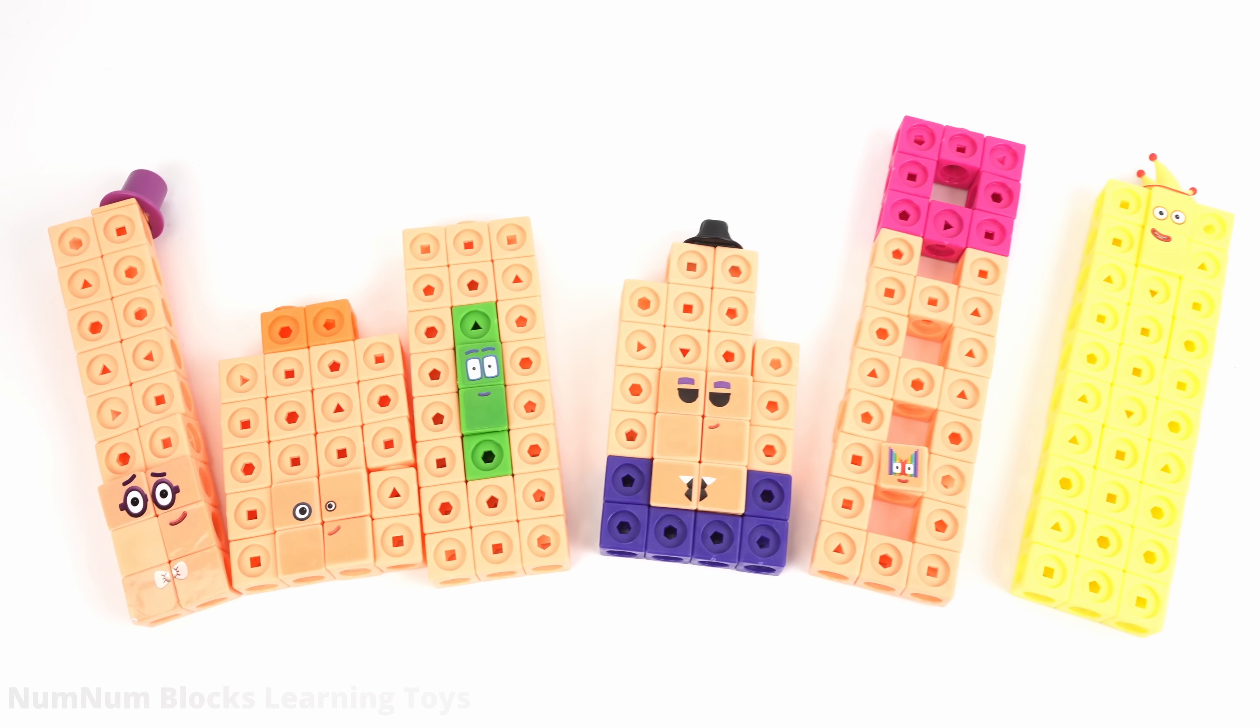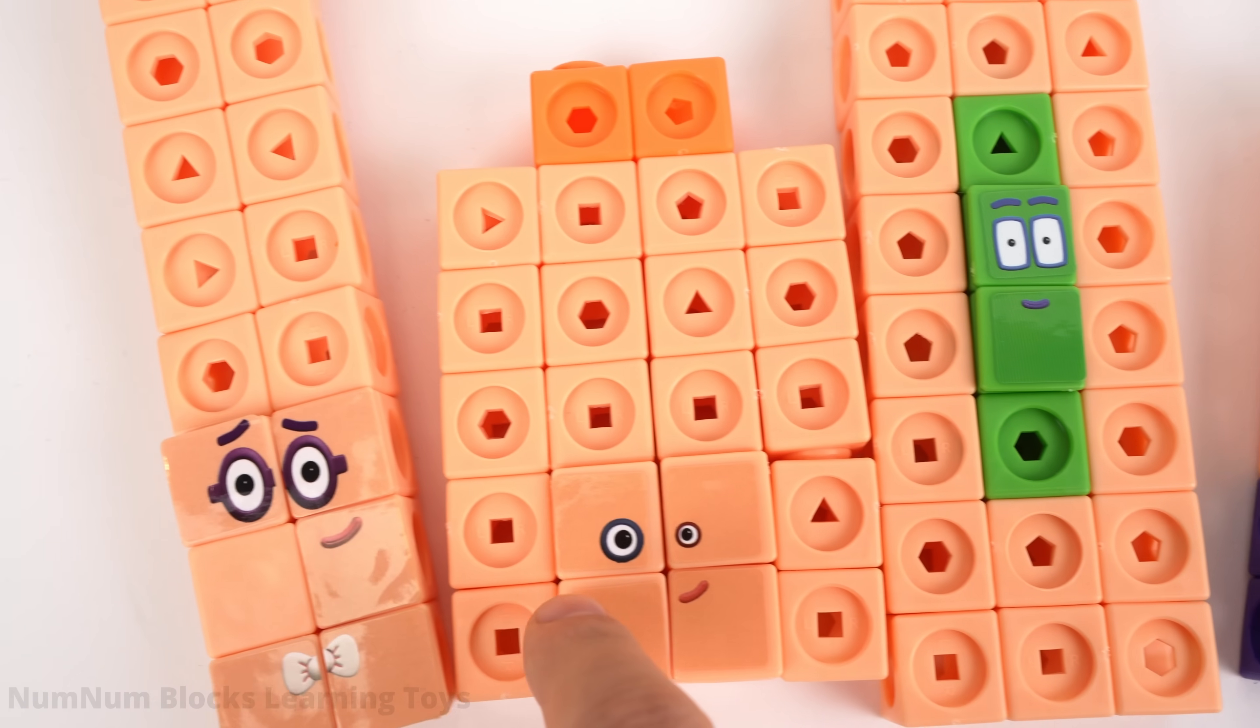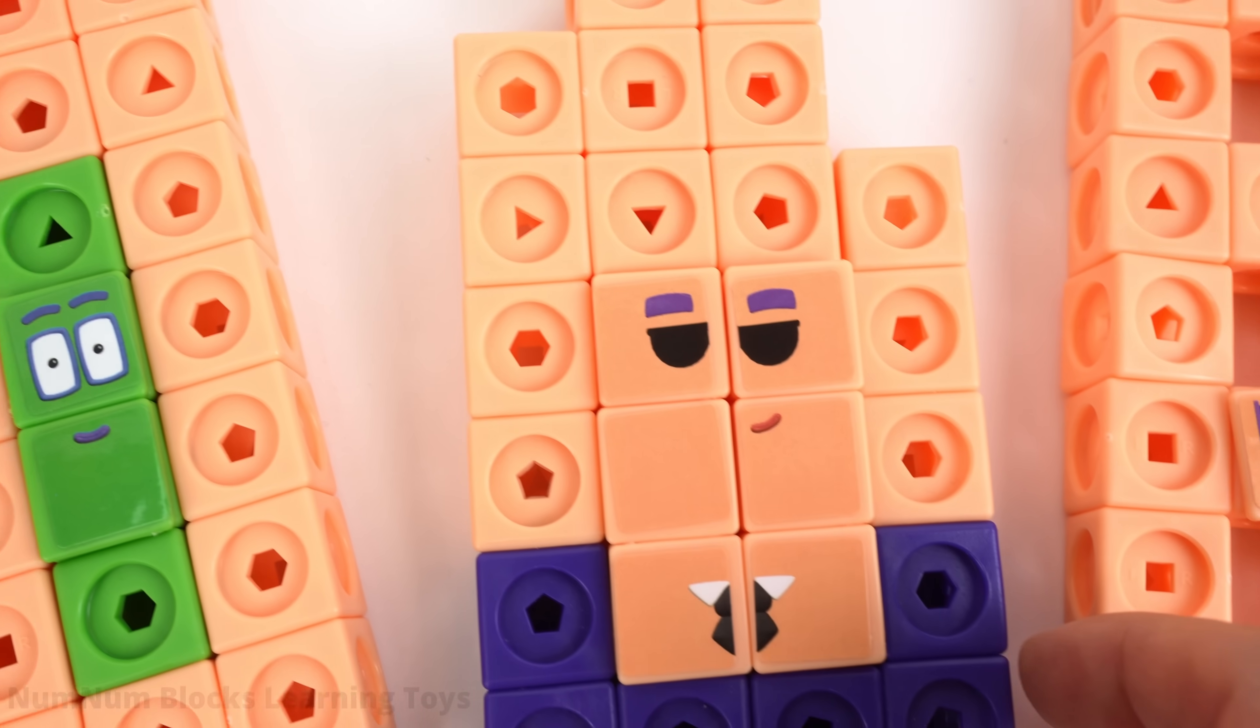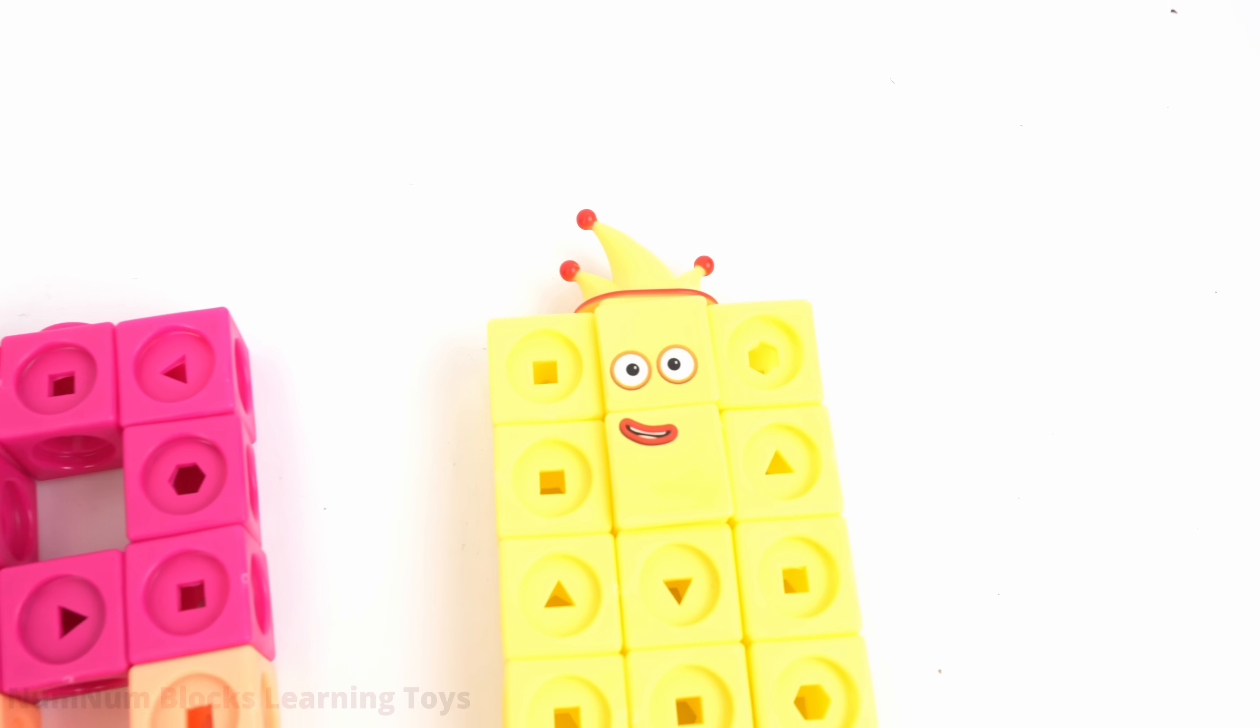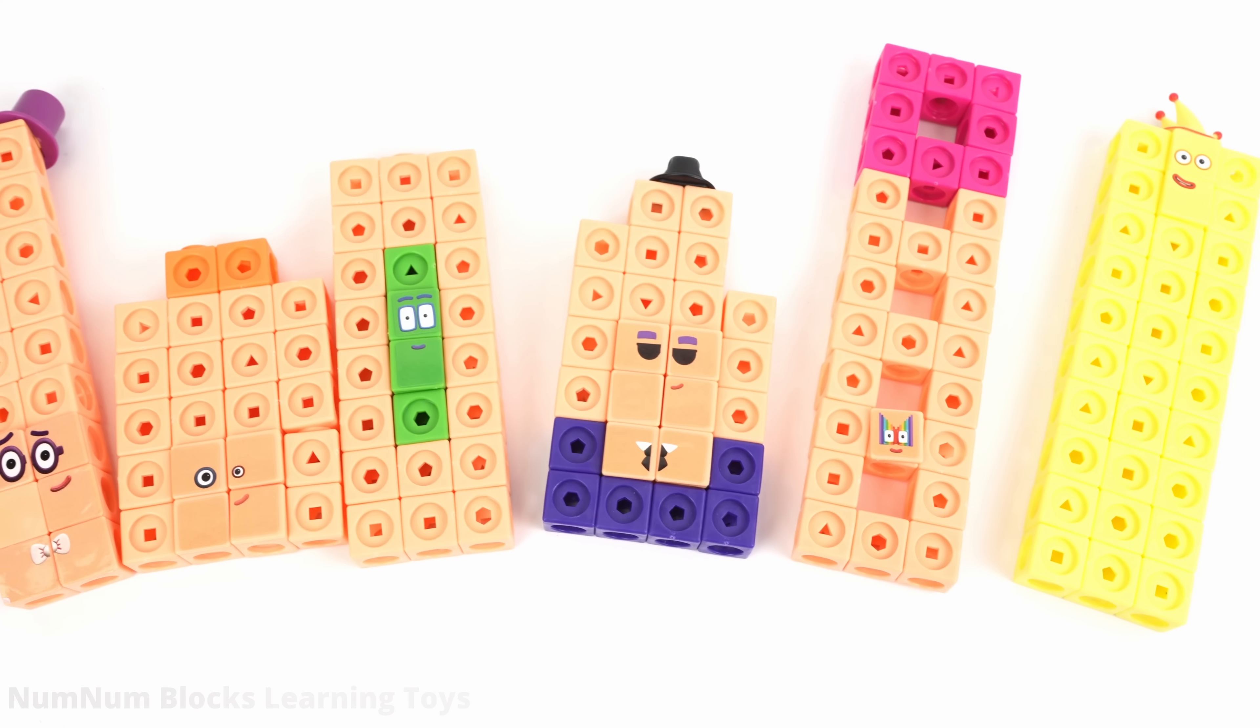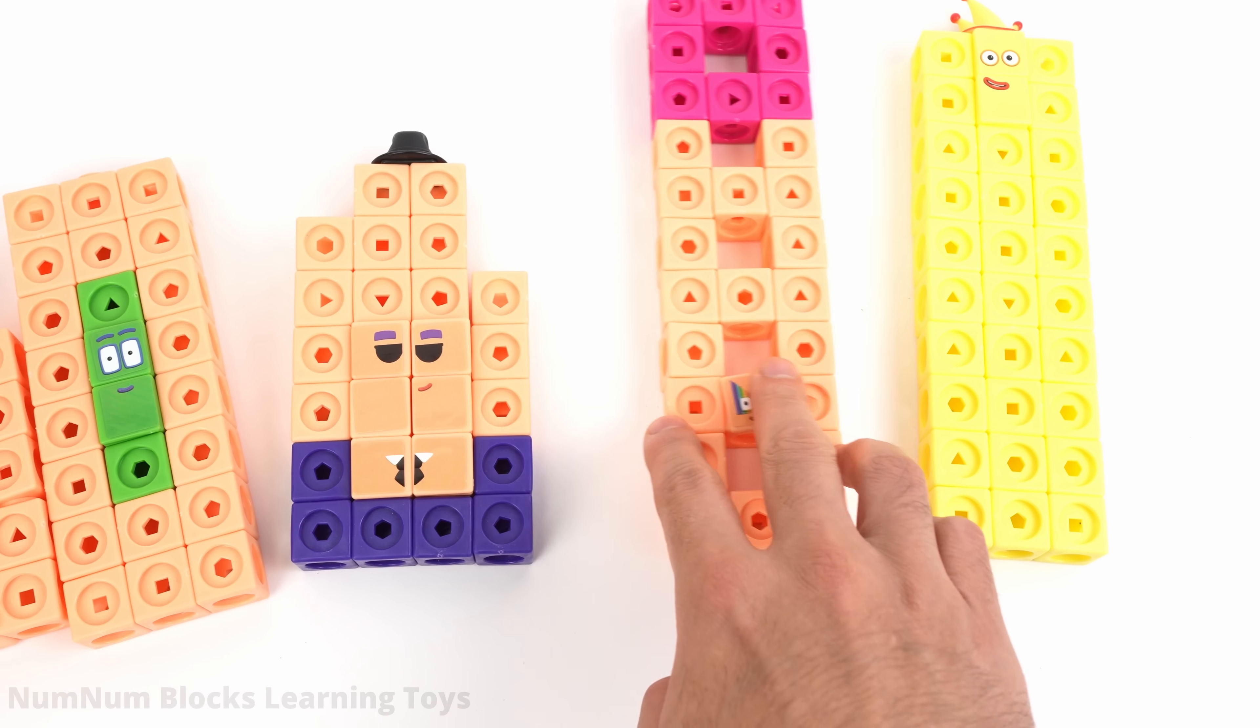Hey everyone, look! We have the number blocks. It's 20, 22, 24, 26, 28, and 30. We have numbers from 20 to 30, but they're all even numbers. We are missing the odd numbers.